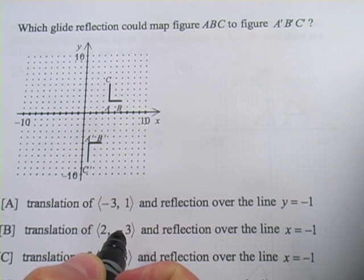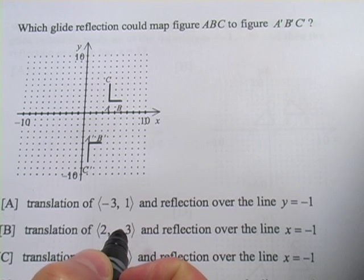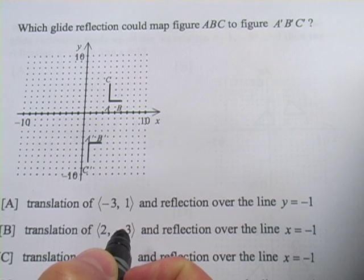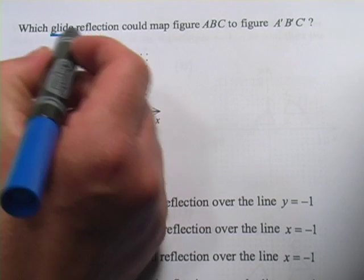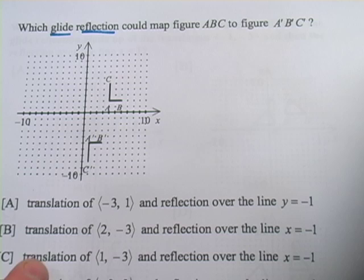These next problems have to do with a type of transformation called a glide reflection. A glide reflection is really a combination of two other transformations.